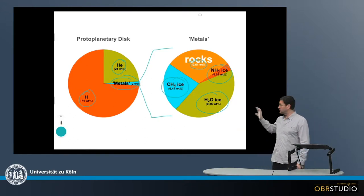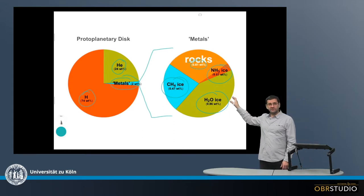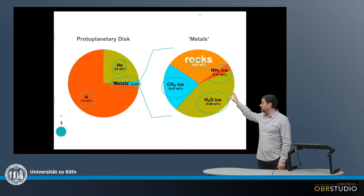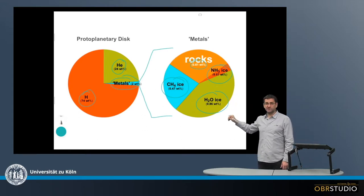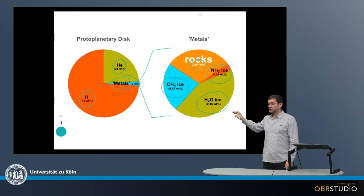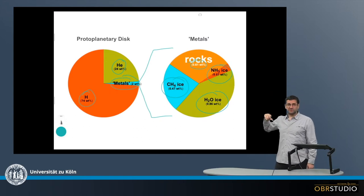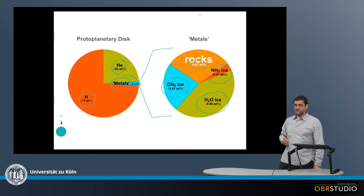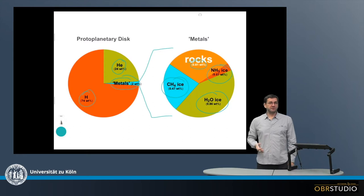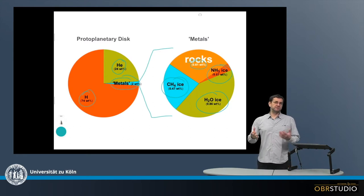So in total: hydrogen and helium formed the sun, rocks formed the terrestrial and other planetary bodies, and the ices formed the gas giants. This is the initial composition, roughly, of our solar system.